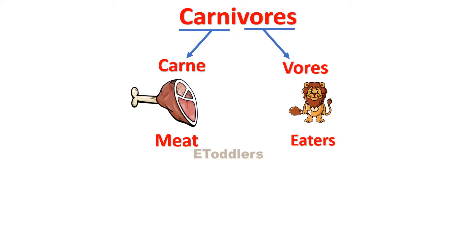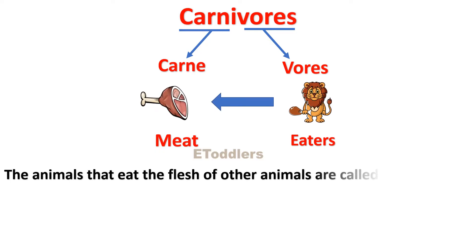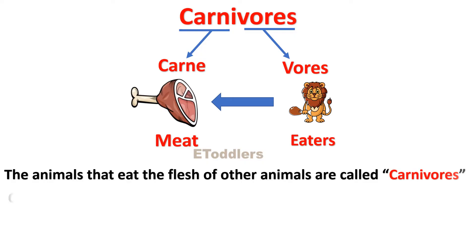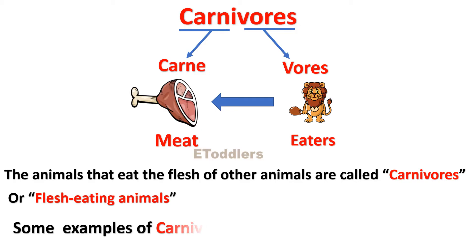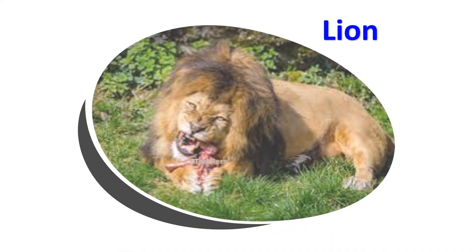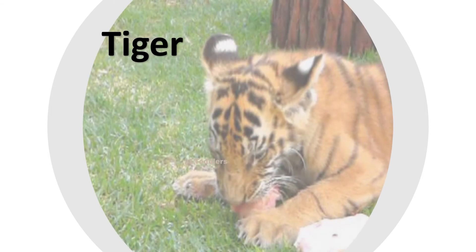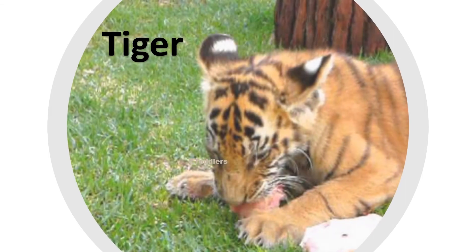The animals that eat the flesh of other animals are called carnivores, or flesh-eating animals. Some examples of carnivores are: Lion, Tiger, and Wolf.